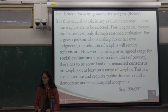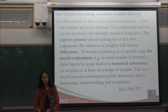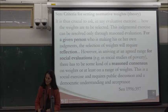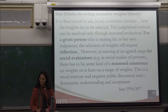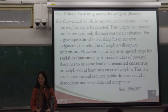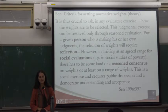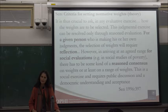Sen discusses weights in almost every book and paper, treating it as a standard feature of the capability approach and of measurement. He asks how weights should be selected and says we have to reason about which is more important relative to others. For an individual, selecting weights requires personal reflection. But when creating an MPI or HDI, there must be a reasoned consensus on at least a range of weights. He emphasizes the need for public discussion and democratic understanding, making weights explicit in case people have strong views about them.